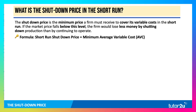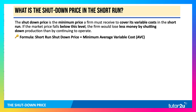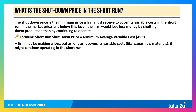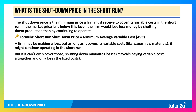The formula is that you need to cover the minimum of average variable cost in the short run — you need a price which covers your variable costs. A firm might be making a loss, but as long as it covers its variable costs like wages, inputs, energy, and raw materials, it might continue to operate in whole or in part in the short run.